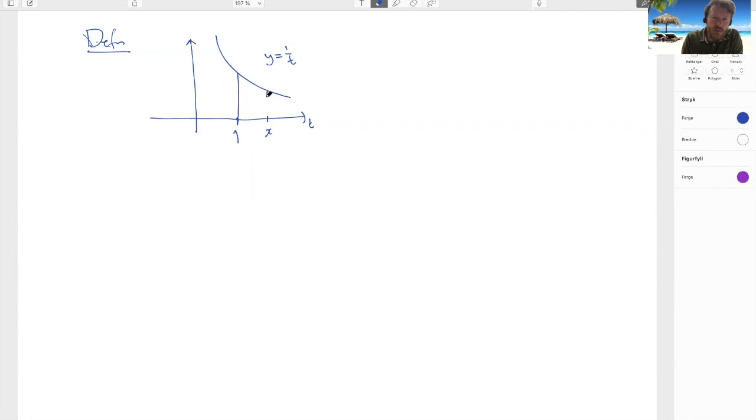What we do next is that we consider this area here, we call it a_x. So with this we define the natural logarithm of x to be equal to a_x when x is bigger than or equal to 1 and then minus this area we get if x is between 0 and 1.